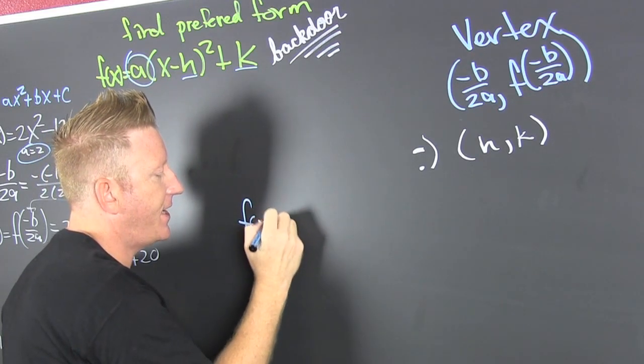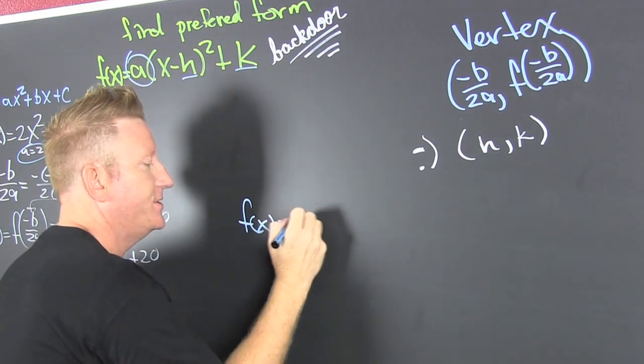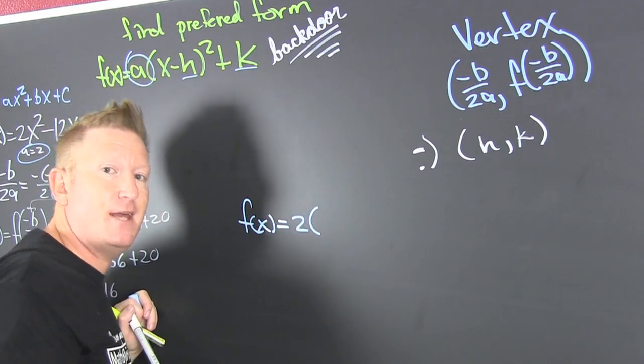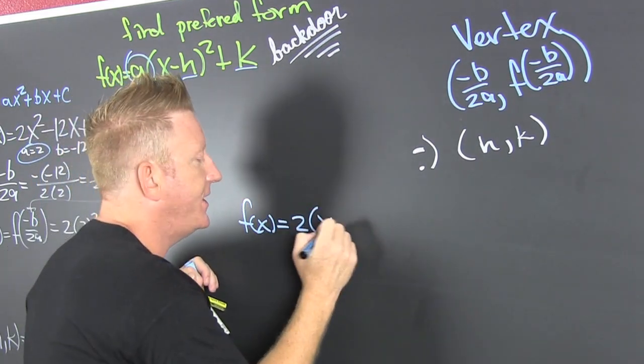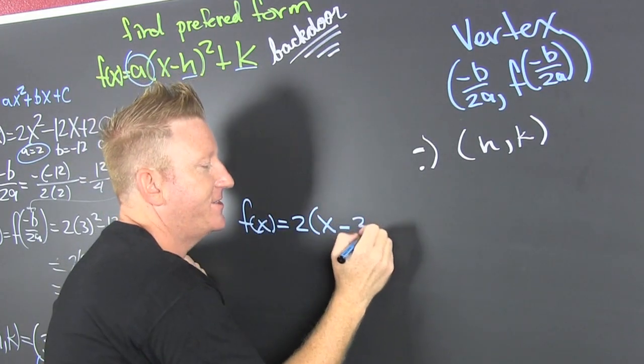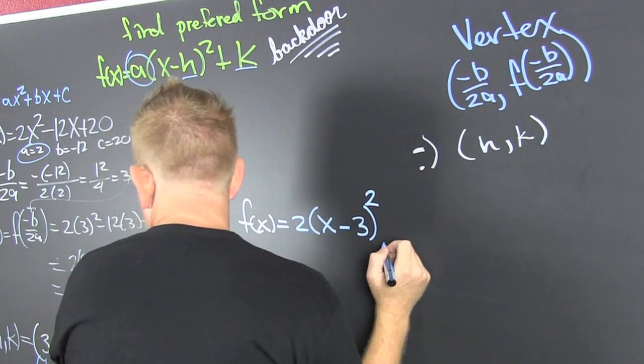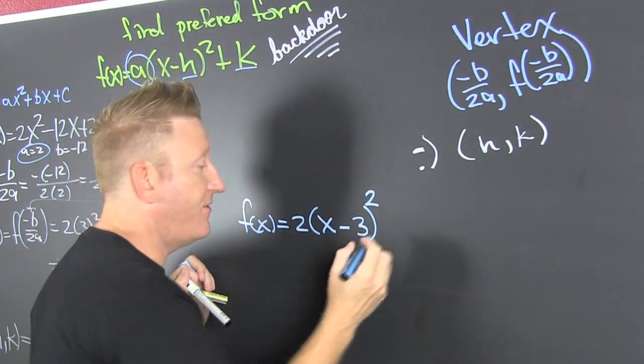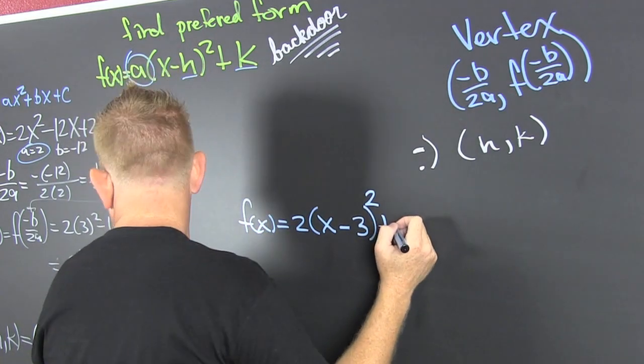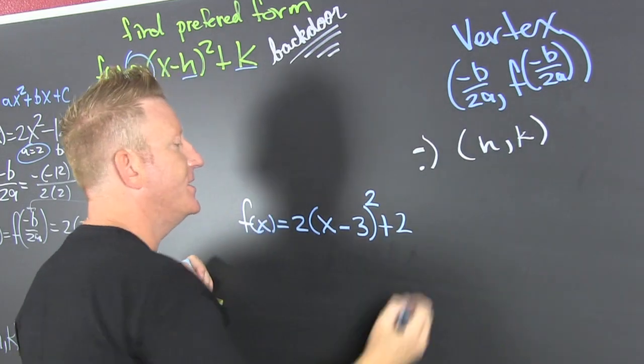f of x is, what was my a? 2. Deuces. Before I say bye-bye to this problem, I need to fill in everything else. So then that's minus an h. What was my h? 3. And then I need to add my k value to it. That's plus deuces.